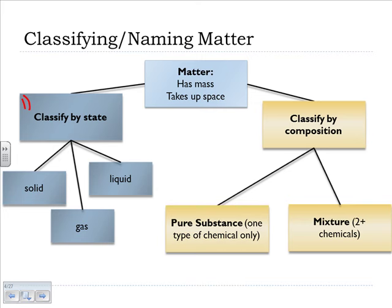A more useful way of classifying matter is to classify it by composition, and that just means that we would be talking about pure substances, one type of chemical only, so things like N2, or O2, or H2O, so a glass of plain old water, or a tank of plain old nitrogen, or a tank of plain old oxygen.